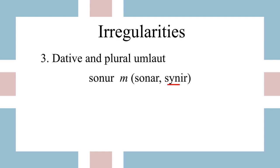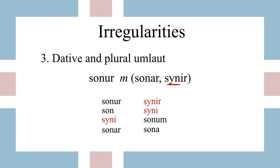Here's another example: 'sonur', which means 'son'. We have a genitive of 'sonar' and plural 'synir', so we see a vowel shift where the -o- becomes an -e-. That means we'll also see it in the dative form. In the singular: 'sonur', 'son', 'syni'; and in the plural we have 'synir' and 'syni'. So watch out for how that plural umlaut can also affect the singular dative.